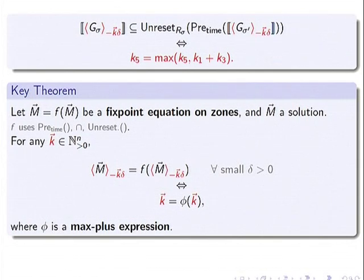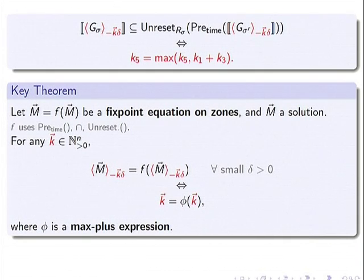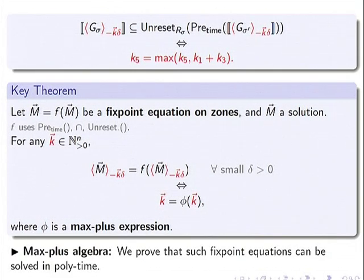This observation holds systematically: given any fixed-point equation on zones, where M is a vector of zones and f uses pre-time, intersections, and standard operations — for any integer vector k, the solution shrunk by k·δ (for small enough δ) is a solution if and only if k satisfies a formula φ, where φ is a max-plus expression. This φ is itself a fixed-point equation on max-plus algebra using only max and +, and we show such equations can be solved efficiently in polynomial time.